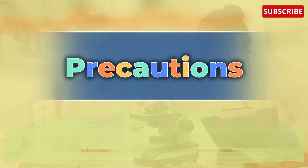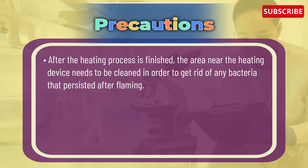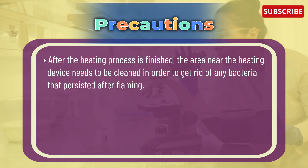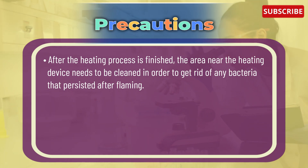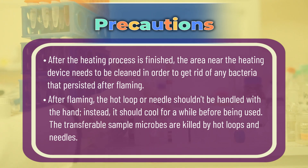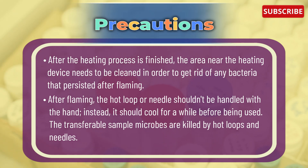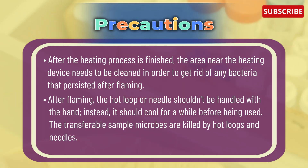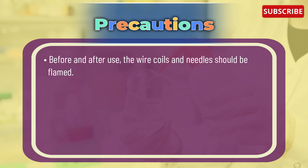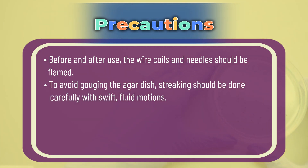Precautions: after the heating process is finished, the area near the heating device needs to be cleaned to get rid of any bacteria that persisted after flaming. After flaming, the hot loop or needle shouldn't be handled with the hand; instead it should cool for a while before being used. The hot loops and needles kill the transferable sample microbes. Before and after use, the wire coils and needles should be flamed to avoid gouging the agar dish; streaking should be done carefully with swift and fluid motions.